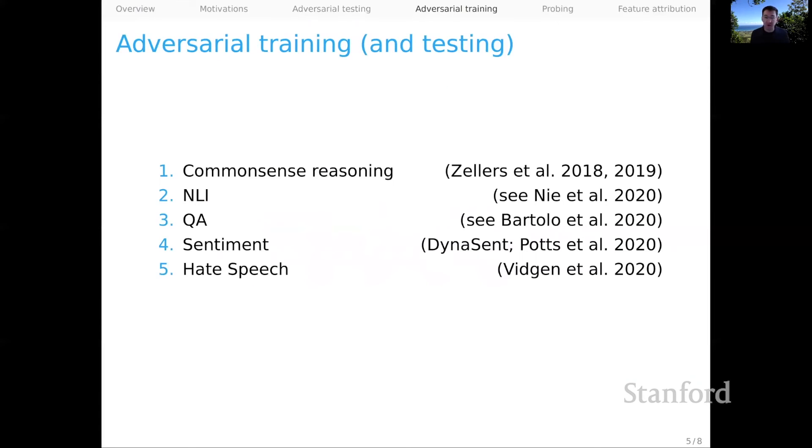As I said, you can also, for selected tasks, move into the mode of doing adversarial training and testing. Here are the cases I know of where the dataset is large enough to support training and testing on examples that were created via some adversarial dynamic. Common sense reasoning, natural language inference, question answering, sentiment and hate speech. And as I said, this is a really exciting opportunity to see just how robust your system is when exposed to examples that we know are difficult for modern architectures, because that's how these datasets were designed.